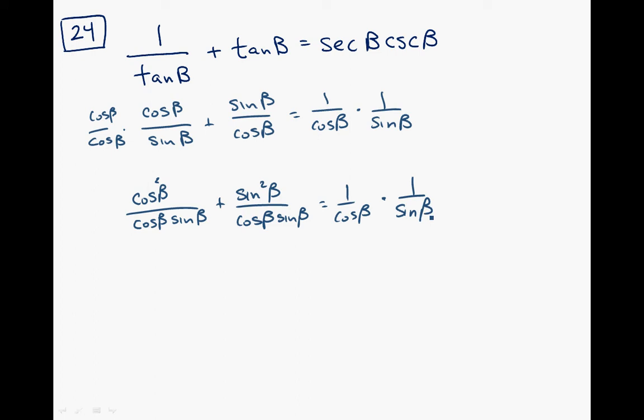This one is going to turn out not to be so bad. When I add these, I keep the denominator. Cosine squared plus sine squared is 1. And then when I multiply this, I get the same thing on the left side as we do on the right side. So that one actually turned out not to be so bad. Maybe I'll try another one.